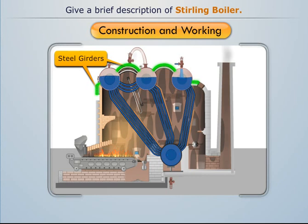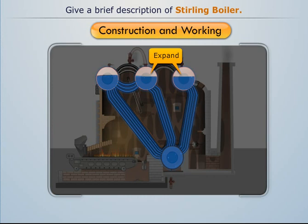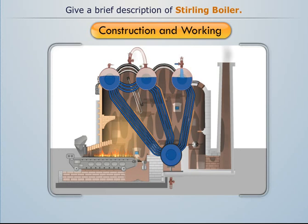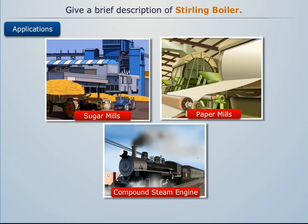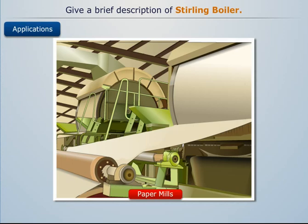This is the complete construction and working of the bent tube Sterling boiler. Sterling boilers are commonly used in sugar mills, paper mills, compound steam engines, and similar applications.